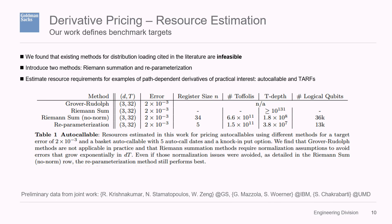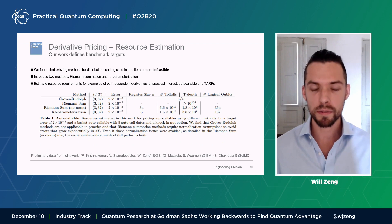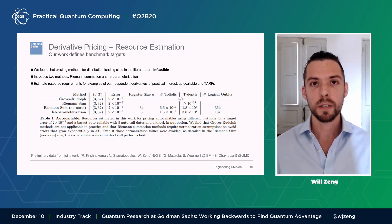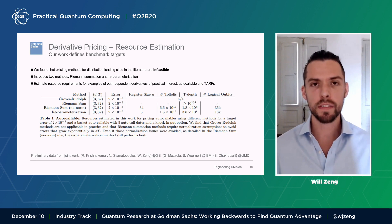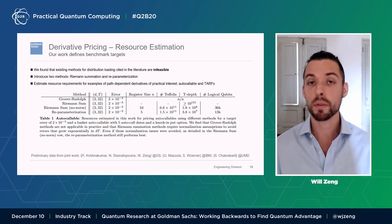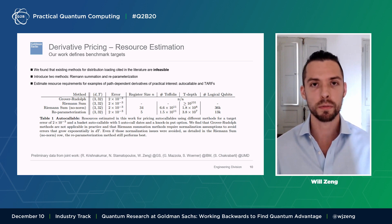Our results look at proposed methods — Grover-Rudolph and Riemann summation — and find that the t-count and Toffoli count are really unreasonable. But we're able to introduce a reparameterization method with our collaborators that requires on the order of 10^11 Toffolis and a t-depth of about 10^7 on 13,000 logical qubits, to achieve an error that would matter in practice for derivative pricing. These resource requirements are out of reach of hardware today, but we're optimistic because this is just a first pass. As we've seen with RSA, there's a lot of opportunity to bring these numbers down algorithmically and to improve hardware architectures adapted to this kind of algorithm.